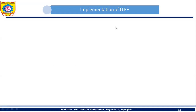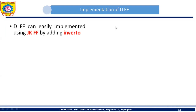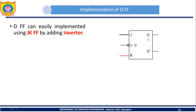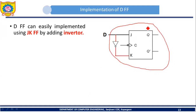Now let's see the implementation of the D flip-flop. A D flip-flop can easily be implemented by using a JK flip-flop — you just need to add one inverter. The inverter should be added between the two inputs J and K. Instead of two separate inputs, we consider only one input D, which stands for data. D is directly connected to the J input, and D is also connected to the input of a NOT gate whose output is connected to the K input of the JK flip-flop.